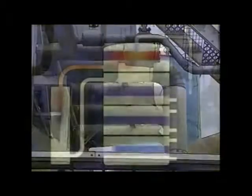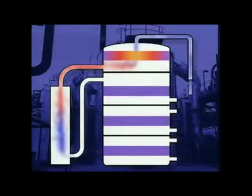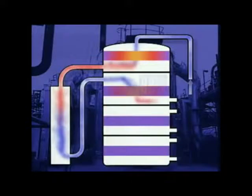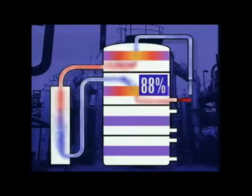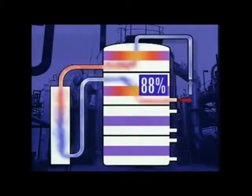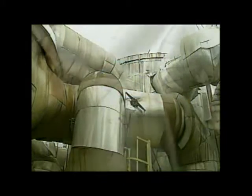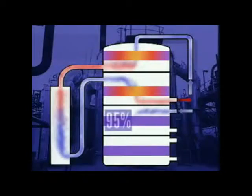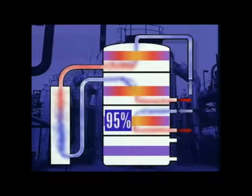The gas stream passes through two further catalyst beds and the percentage conversion increases. Between each stage, the hot gases have to be cooled. By the third bed, about 95% of the original sulphur dioxide has been converted to sulphur trioxide.